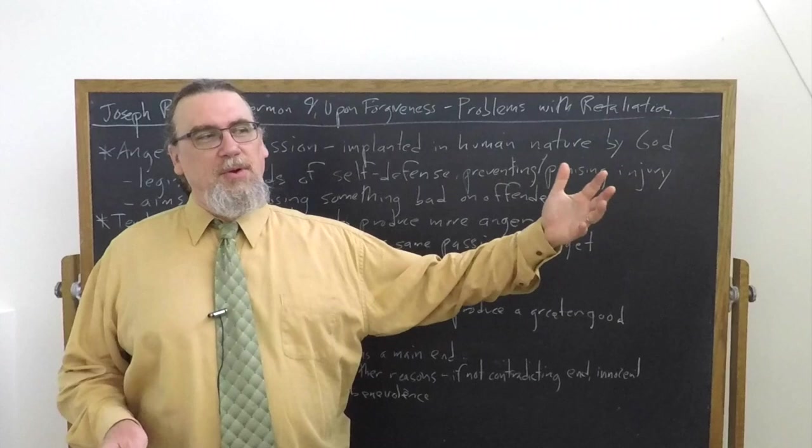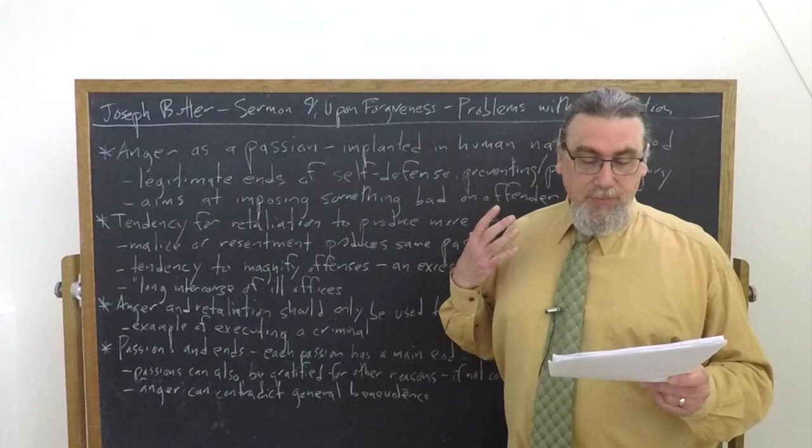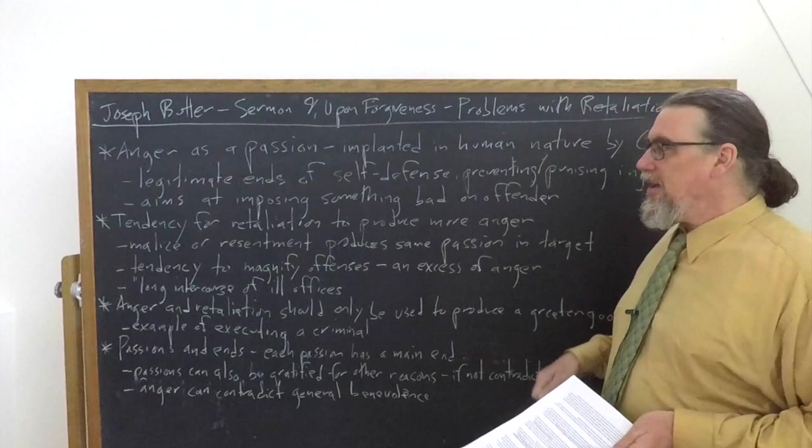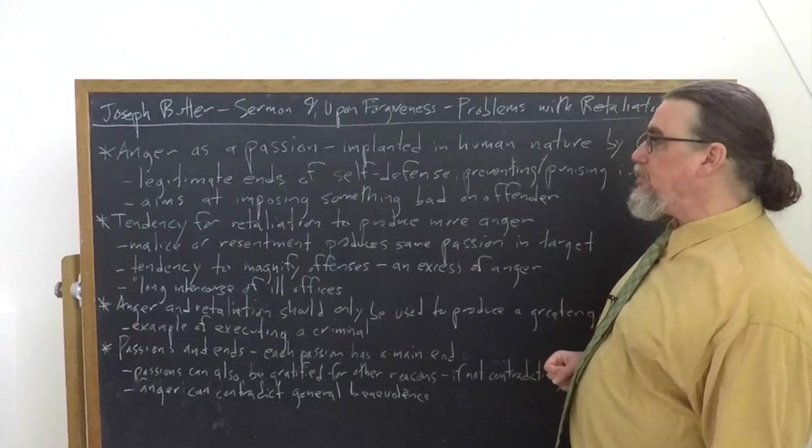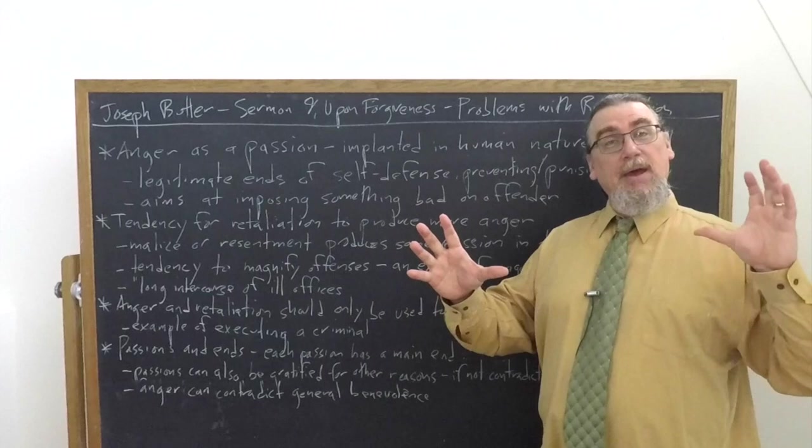He says malice or resentment towards any person has a tendency to beget the same passion in him who is the object of it. So person A does something to person B. Person B now gets angry at person A, retaliates out of that. Now person A is also angry at person B for having gotten angry at them in the first place.